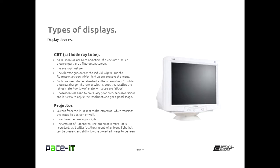So what types of displays are there? Well, we still get to discuss cathode ray tube — the CRT. Even though most people won't buy CRTs because they're old technology, there are still some people who do. With CRT, it uses a combination of a vacuum tube, an electron gun, and a fluorescent screen. CRTs are analog in nature. The way it works is the electron gun excites the individual pixels on the fluorescent screen, which lights up and presents the image. That gun does it a line at a time.